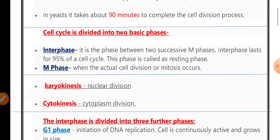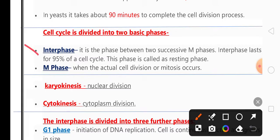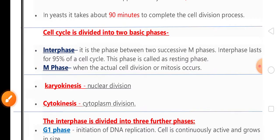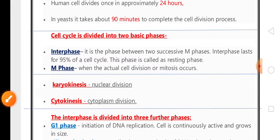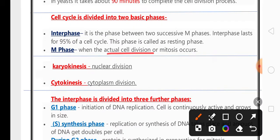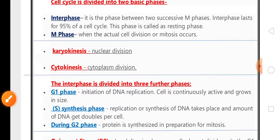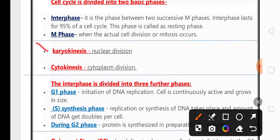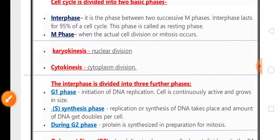In cell cycle there are two phases: interphase and M phase. Interphase is between two successive mitotic phases and it lasts for about 95% of the cell cycle. It is also called the resting phase. In M phase, the actual cell division starts. Nuclear division is called karyokinesis and cytoplasm division is called cytokinesis.